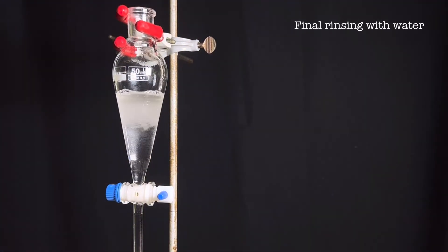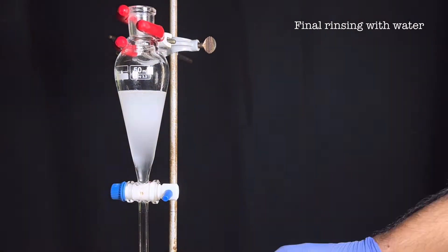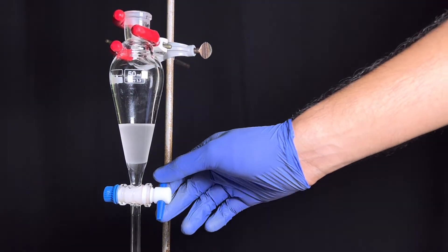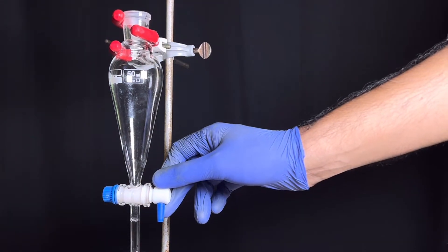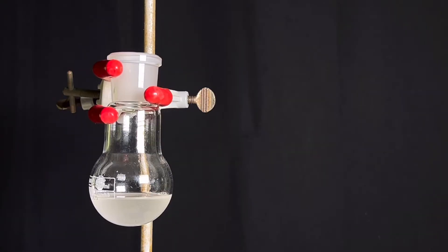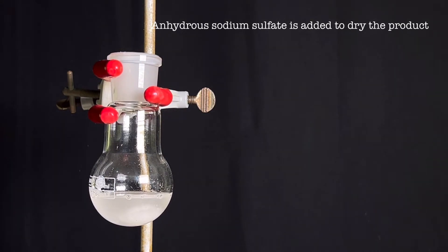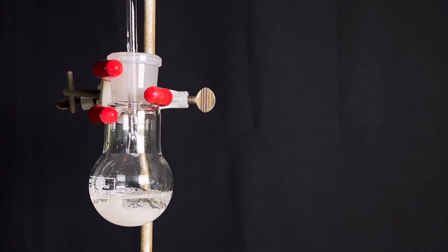One final water washing was given and the aqueous layer was discarded. At last the product was drained into a small round bottom flask. The solution appears cloudy due to the presence of water, so anhydrous sodium sulphate was added to dry the product. After few seconds we notice clear solution and free flowing solid in the bottom of the flask. This indicates drying is complete.